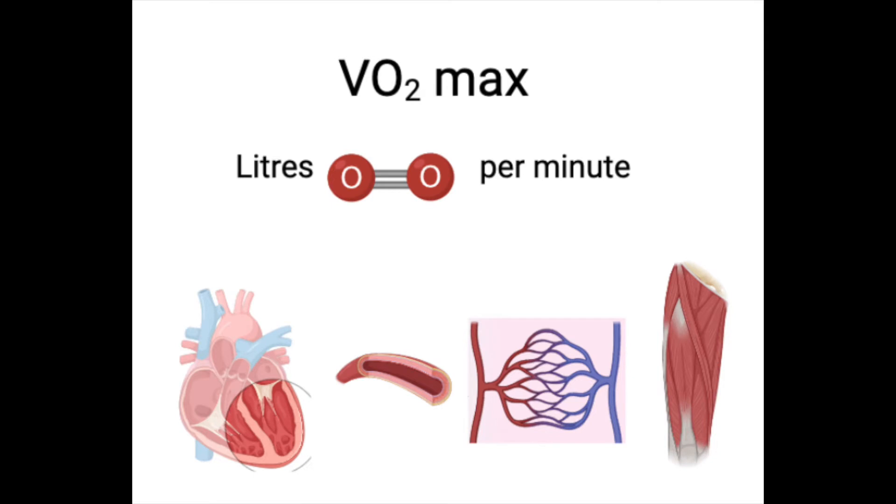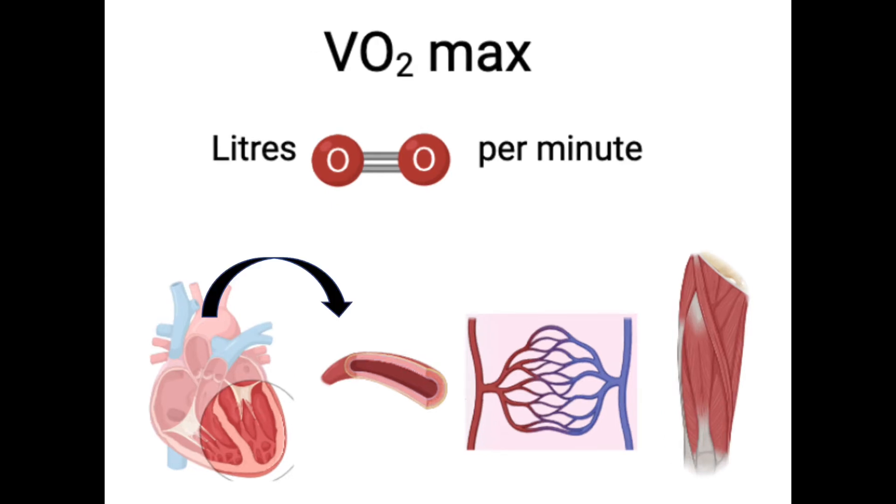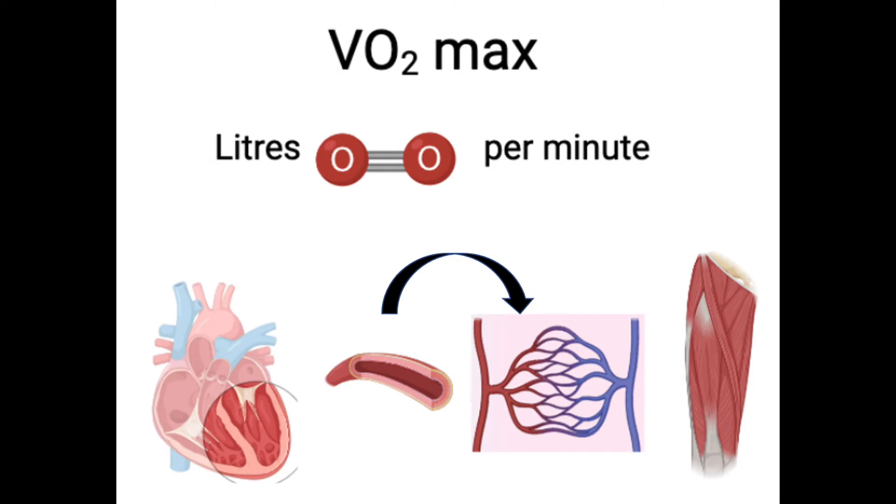VO2max is a measure of the amount of blood our heart can pump through our arteries and the ability of our exercising tissue to extract that oxygen from our blood.